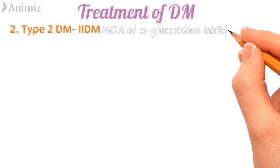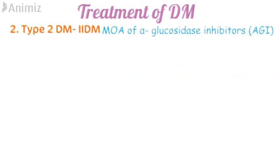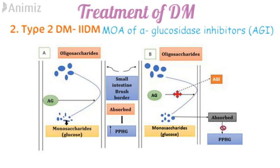Next is the mechanism of action of alpha-glucosidase inhibitors. Oligosaccharides are normally broken down into monosaccharides — that is, glucose — by this enzyme, which are then absorbed into the blood, leading to postprandial hyperglycemia. These inhibitors block this enzyme and inhibit the breakdown of oligosaccharides into glucose. Drugs in this category include acarbose, miglitol, and voglibose.